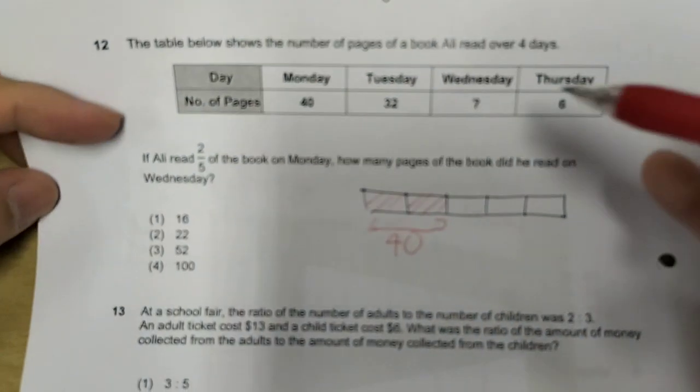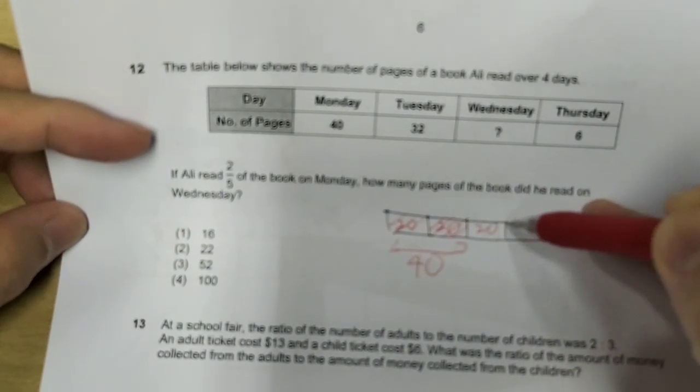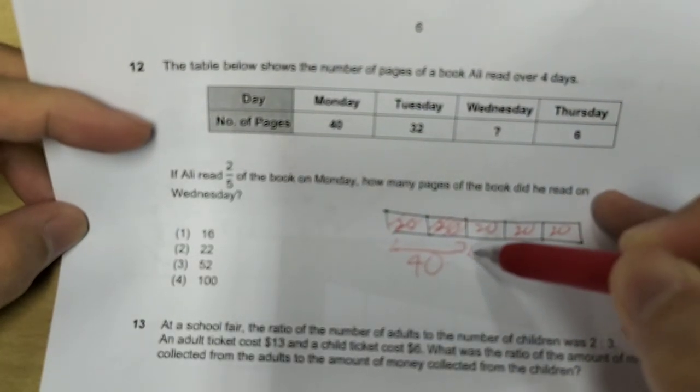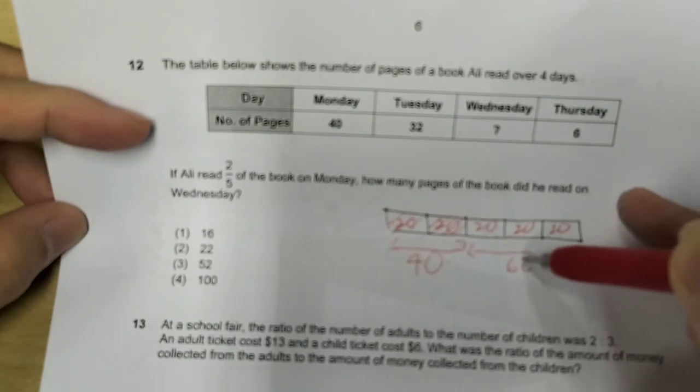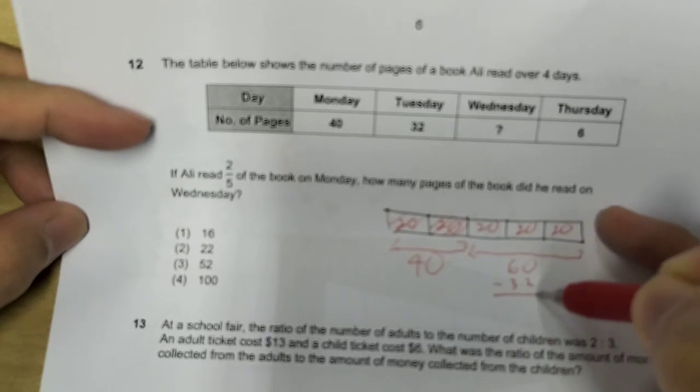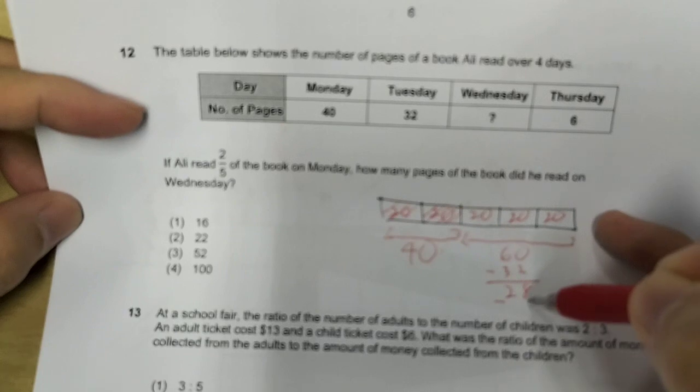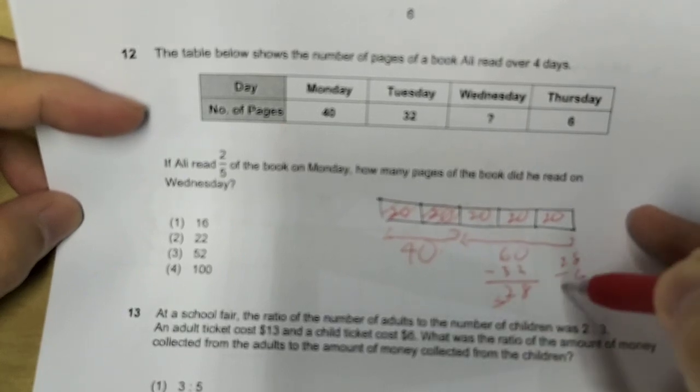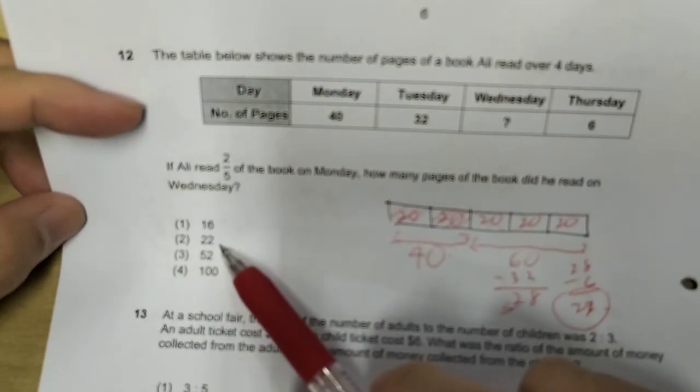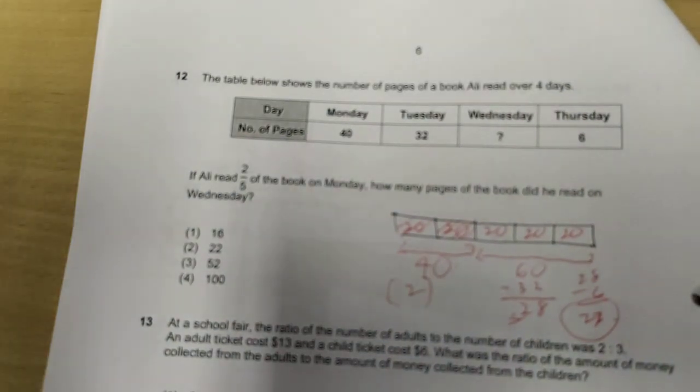So, one-fifth, two-fifths, and that is 40. That means you can find out what is one part. One part is just 20, right? So, every part here is just 20. So, after Monday, there are 60 pages left, not read. After Tuesday, minus 32, I'm left with 28 pages. Minus away Thursday, I'm left with 22 pages. So, 22 pages here were read on Wednesday. Answer is number 2.